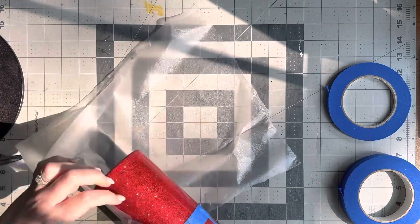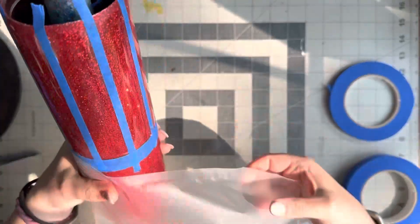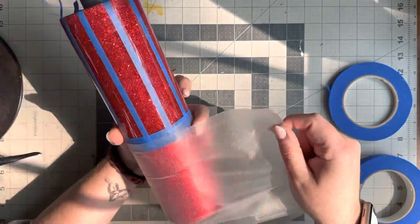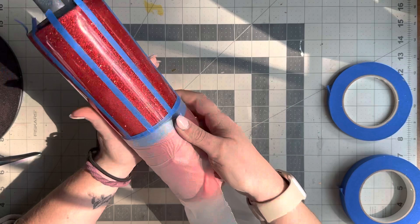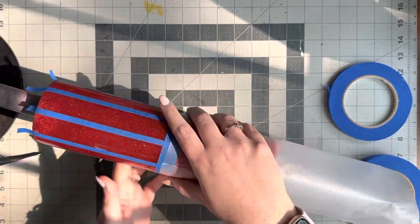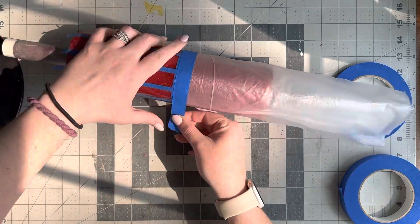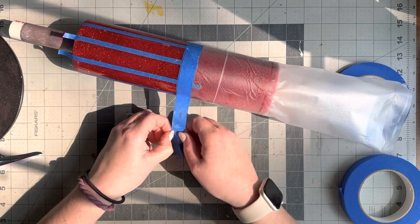After I had everything evened out and taped off where I wanted it I used press and seal saran wrap and just wrapped it around the bottom portion where I plan to use my printable vinyl. I made sure to tape it off so no spray paint seeped underneath that press and seal.